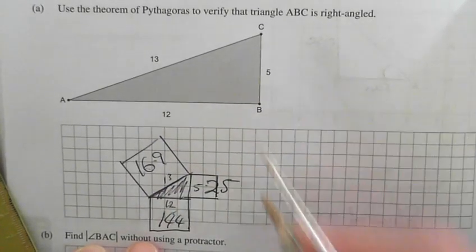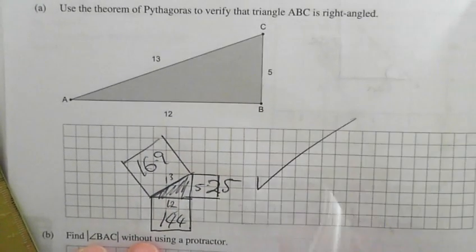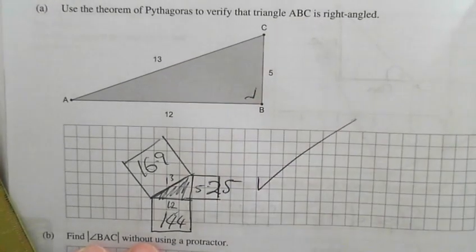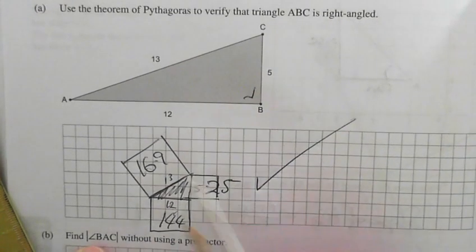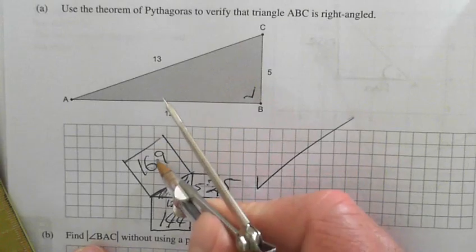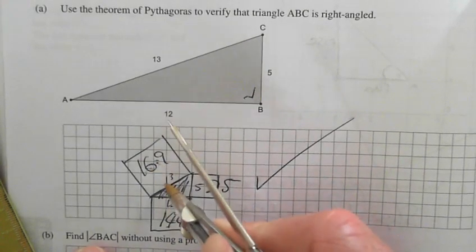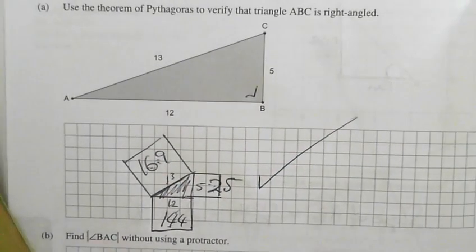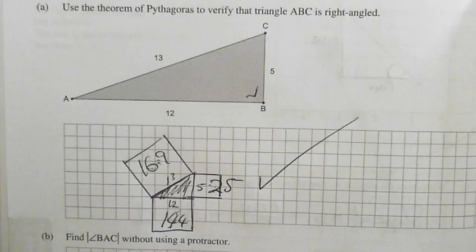So there you go, I've proven that that is a right-angle triangle. It's all right because the area of these two fields has added to this one. When I got the square root of 169, the answer is 13. It works out perfectly, doesn't it? It all adds up.